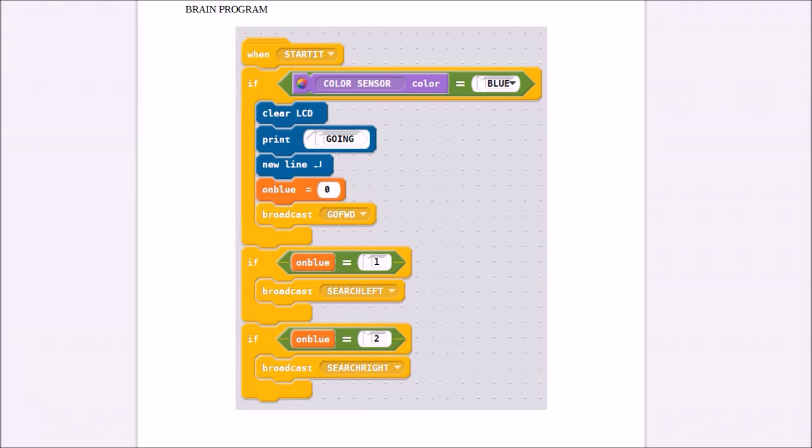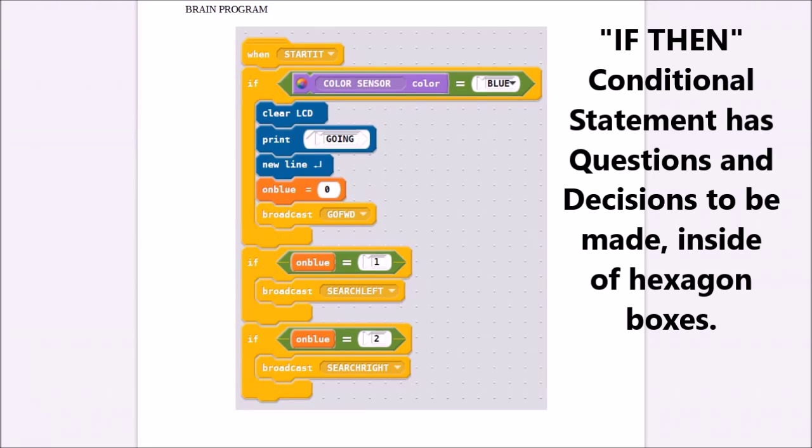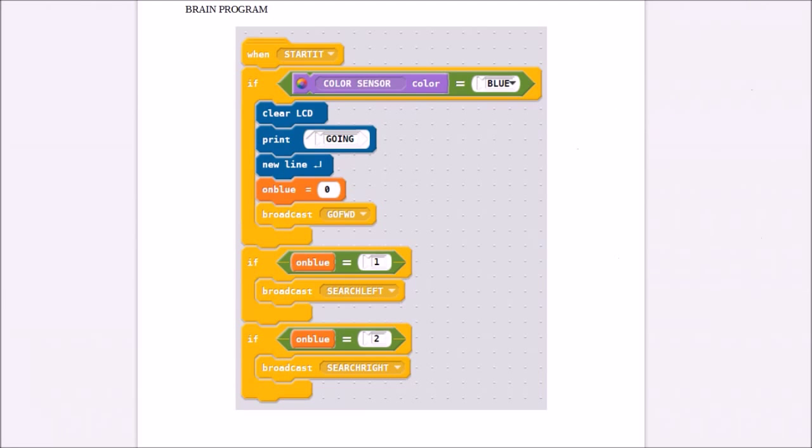So if the color sensor detects blue, then the robot will go forward. The second if-then-else statement, or conditional statement, says if on blue equals one, then you broadcast search left. So if the variable on blue is one, then you turn left. The last conditional statement, or if-then-else statement, is if on blue equals two, you broadcast search right.